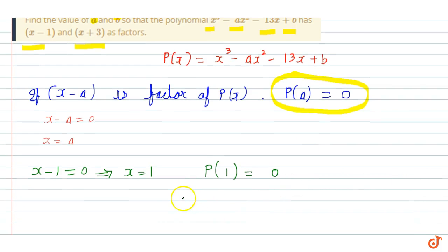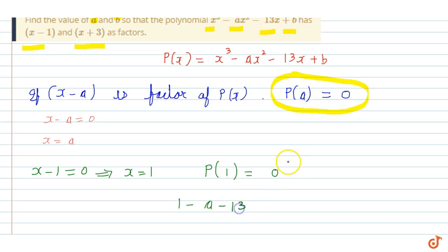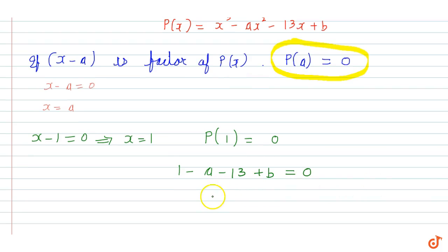We substitute x = 1 into p(x). So 1 cube is 1, minus a into 1 square is minus a, then minus 13 into 1 is minus 13, and then the constant b. So the equation becomes: 1 minus a minus 13 plus b equals 0, which simplifies to b minus a minus 12 equals 0.